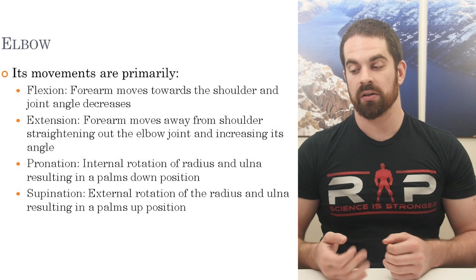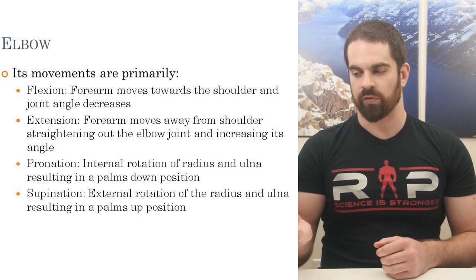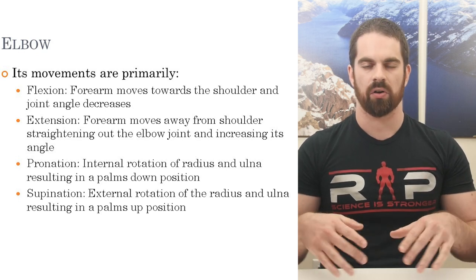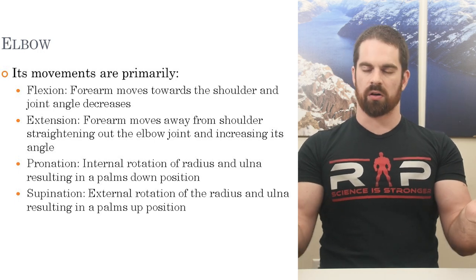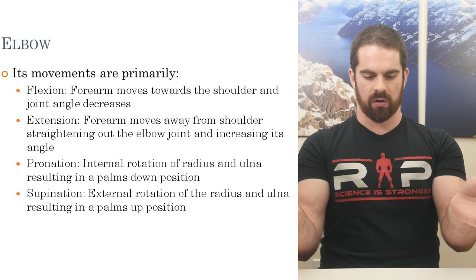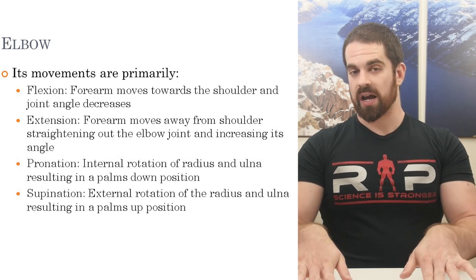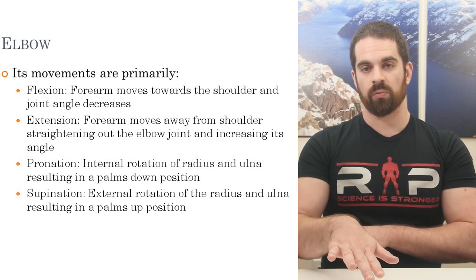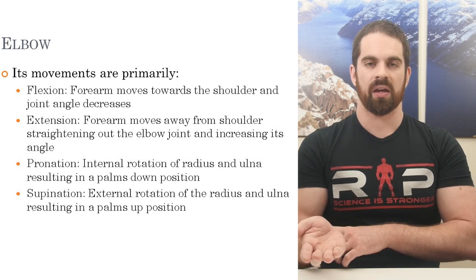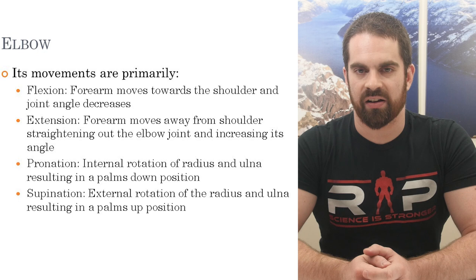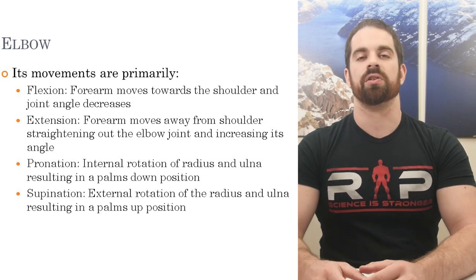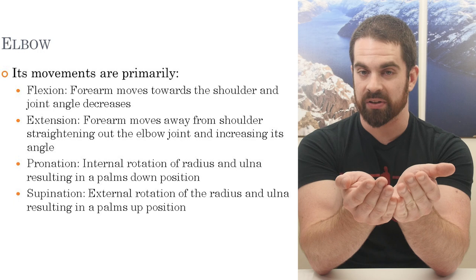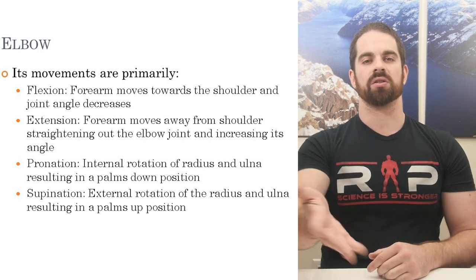We can also see some unique movements: pronation and supination. Pronation is an internal rotation of the forearm — of the radius and ulna — resulting in a palms-down position. For pronation, you start neutral or palms up and move towards palms down. Supination is the opposite: external rotation of the forearm, resulting in a palms-up position. A simple way to remember it — supination is like making a bowl of soup with your hands. Pronation: palms down. Supination: palms up.